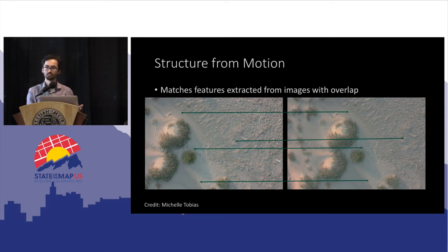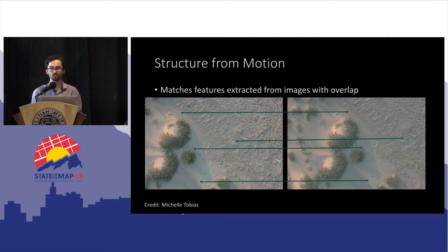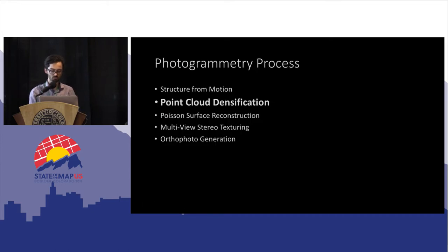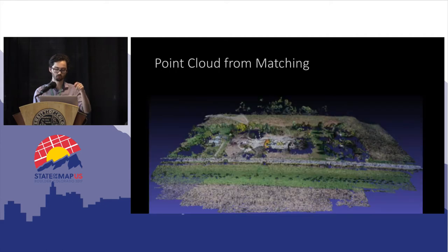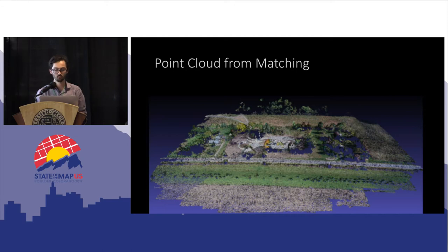We use, thanks to Mapillary, a structure from motion software they've released open source — and it's really great. You get all these points, and here's a photo of this sparse point cloud. It looks actually pretty good. You can kind of understand what's going on: there's a road, a parking lot, maybe a building, and lots of trees.